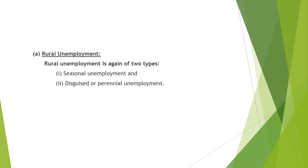Indian agriculture is also suffering from disguised or perennial unemployment due to excessive pressure of population. In disguised unemployment, apparently it seems that everyone is employed but in reality, sufficient full-time work is not available for all. In India, about 72% of the working population is engaged in agriculture and allied activities.